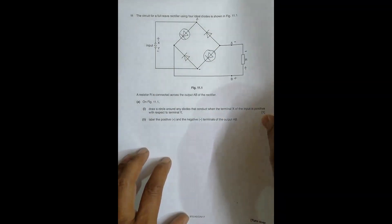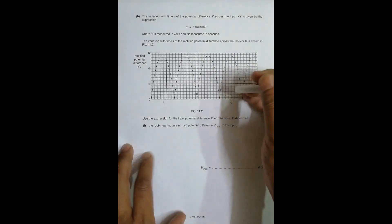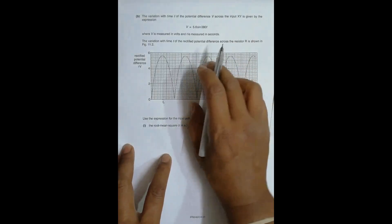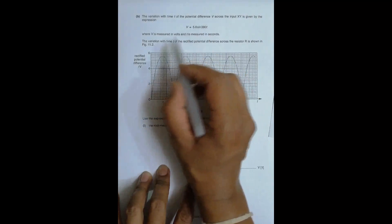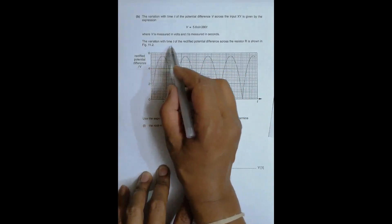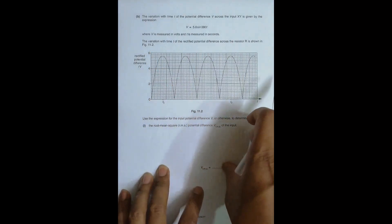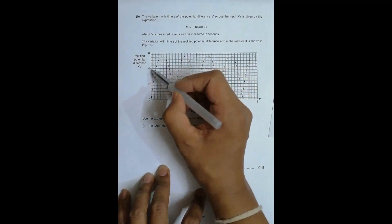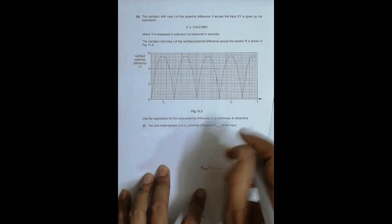Then in the next part, what you have is the variation with time t of the potential difference V across the input XY is given by this equation, where V is in volts and t is in seconds. The variation with the time t of the PD across the resistor is as shown. So this is the variation, the peak value is at 5.6.